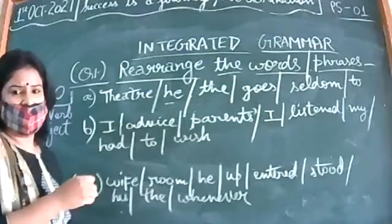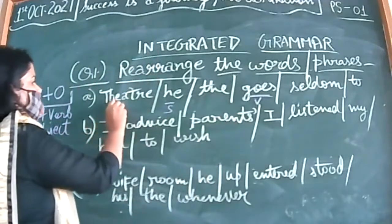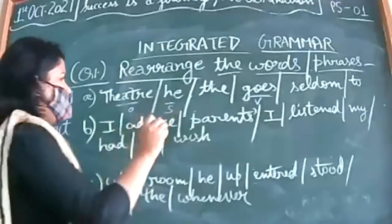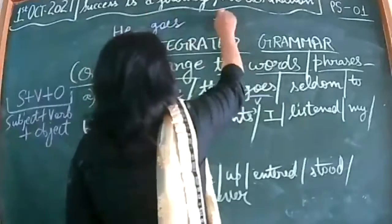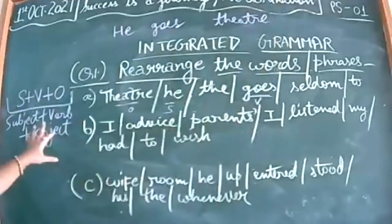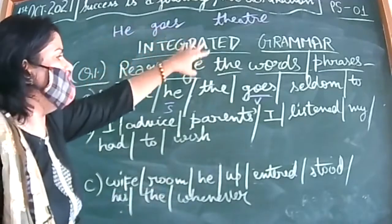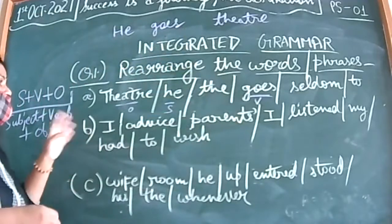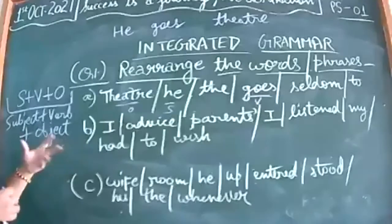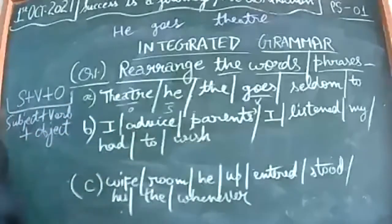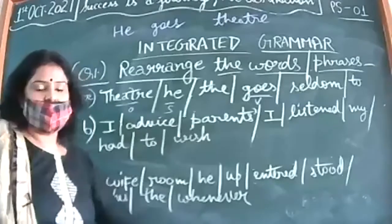For example: 'theater, he, the, go, seldom, to.' Our subject is 'he', the verb is 'goes' (action word), and upon which action has been performed — that is 'theater' (object). In between you have to fit the other words. So the answer is: he seldom goes to the theater. Seldom means rarely.